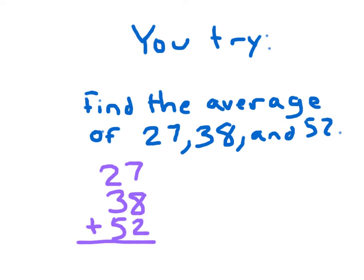7 plus 8 plus 2 is 17. 7, regroup the 1. 1 plus 2 is 3, plus 3 is 6, plus 5 is 11. So I have 117. I'm going to go ahead and set up a division problem now of 117, and since there are 1, 2, 3 numbers there that I am averaging, I divide by 3.